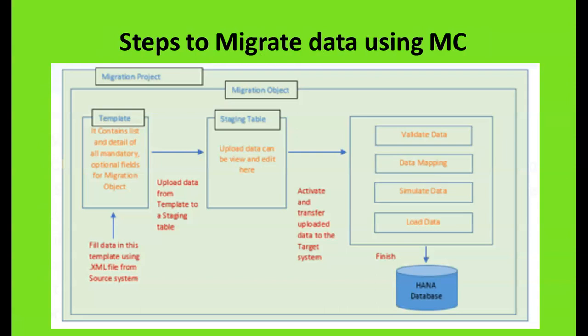What are the steps to migrate data using Migration Cockpit? Starting with a file — for example, an XML file from the source system — it is loaded into a template, which contains all mandatory and optional fields for the migration object. The data is then uploaded from the template to a staging table, where it can be viewed and edited. Then we activate and transfer the uploaded data: we validate the data, do data mapping, simulate the data, and finally load it into the target HANA database. In summary: template, staging table, and validations.